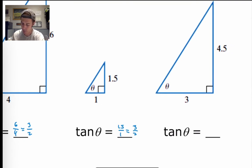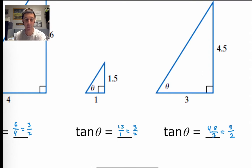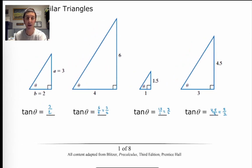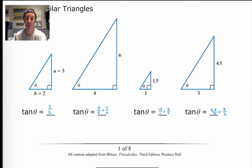And the same thing happens in the last triangle: 4.5 over 3, divided by 1.5, gives 3 over 2. The tangent function gives us the same output value because the angle measure is the same, even though it could be inside a variety of different triangles. The triangles are just scaled up or scaled down versions of one another — that's what allows us to use a hypotenuse of 2 instead of 1 in the unit circle, just multiplying side lengths without changing angle measures.